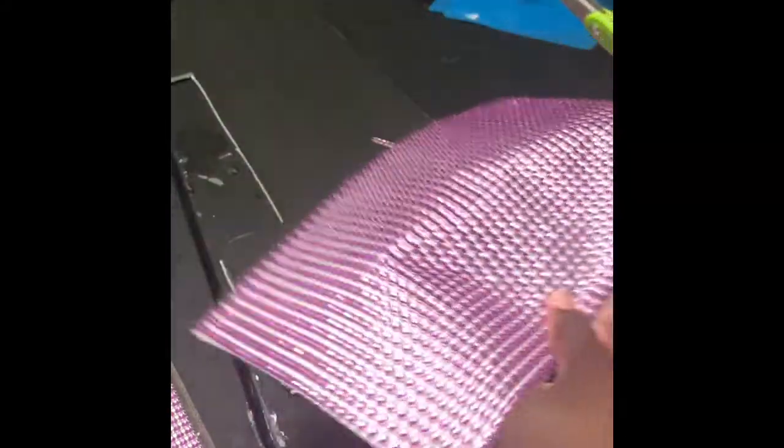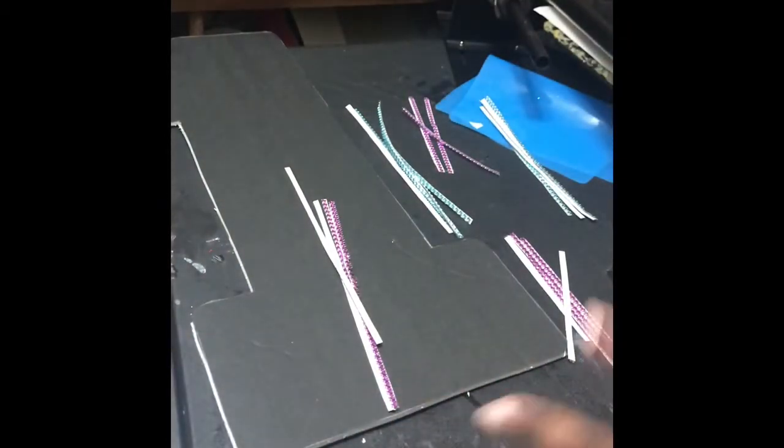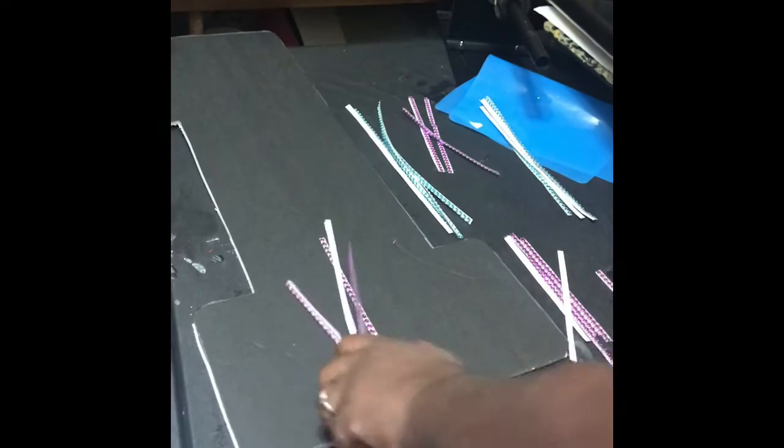And then I will be back. Okay, so now I cut out all of my diamond wraps that I think I'm going to use. And now we're going to just place them on the board the way that I want them to be.